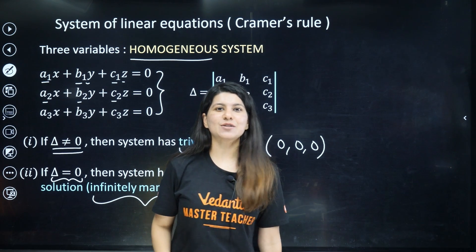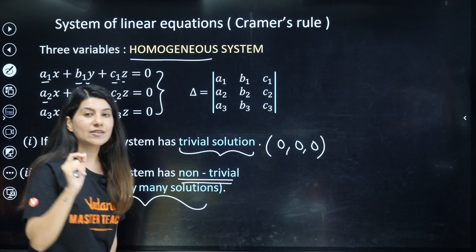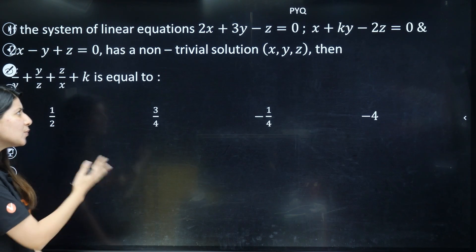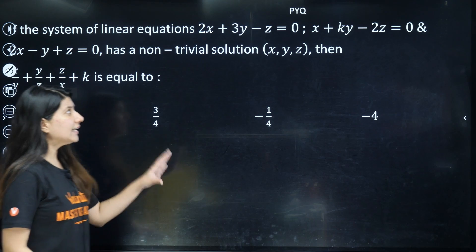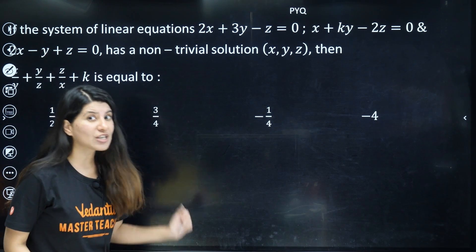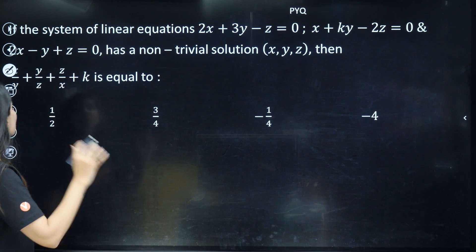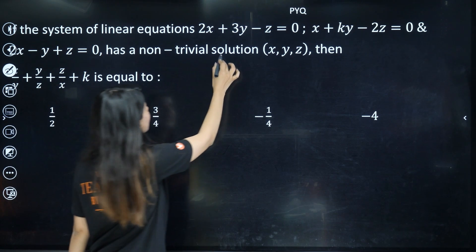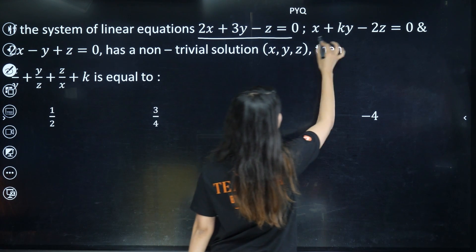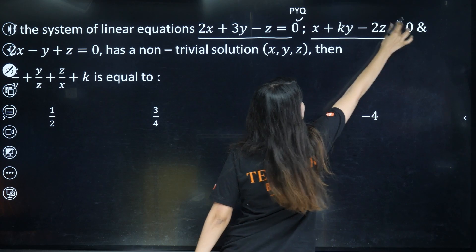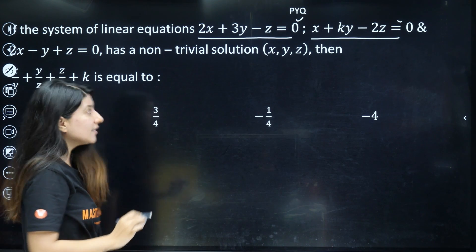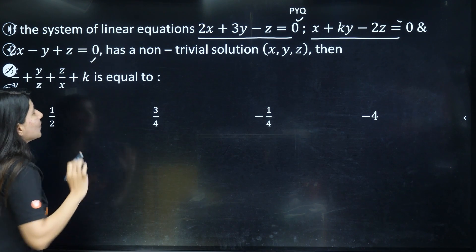So didn't get it? Let's revise this through a problem. Let's understand with the help of a PYQ. This is the previous year question from JEE Main itself and the question says that the system of linear equations - we have been given three equations and you can see this is homogeneous because the right hand side is nothing but 0.